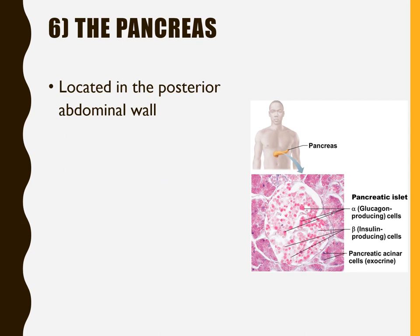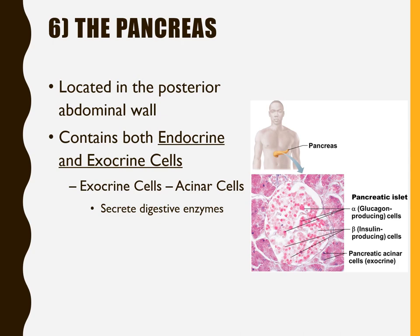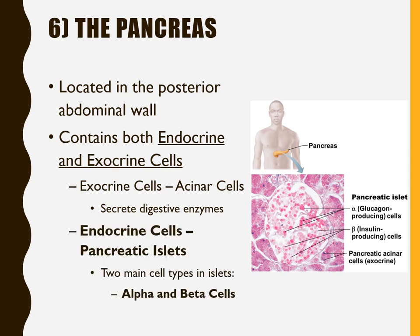Now let's move to organs with significant endocrine function alongside other roles. First is the pancreas, located in the superior posterior abdomen. It contains both endocrine and exocrine cells. The exocrine acinar cells secrete most of our digestive enzymes. What we're focused on for this unit are the endocrine cells — the pancreatic islets — which appear as distinct lighter-staining clusters among the darker acinar cells in histological slides.